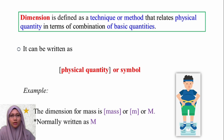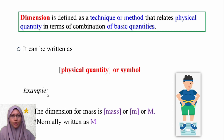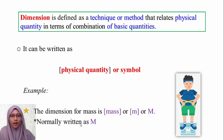The way we write the dimension is by having a bracket with the physical quantity inside the bracket, or we can write a symbol. For example, the dimension of mass is written as bracket M, bracket small m, or the symbol capital M, and it is normally written as capital M.